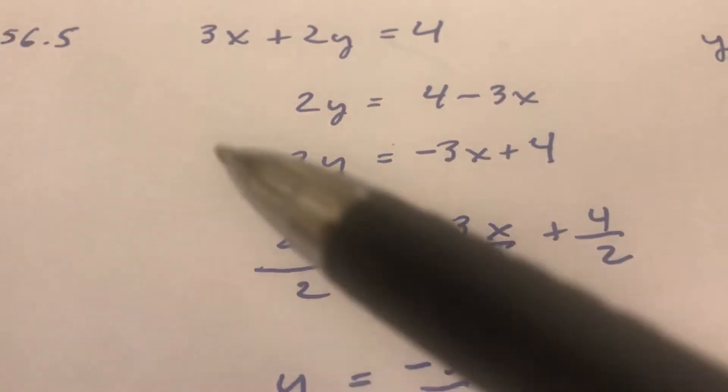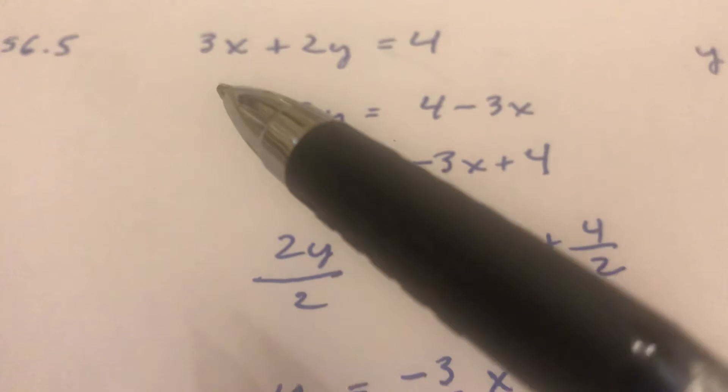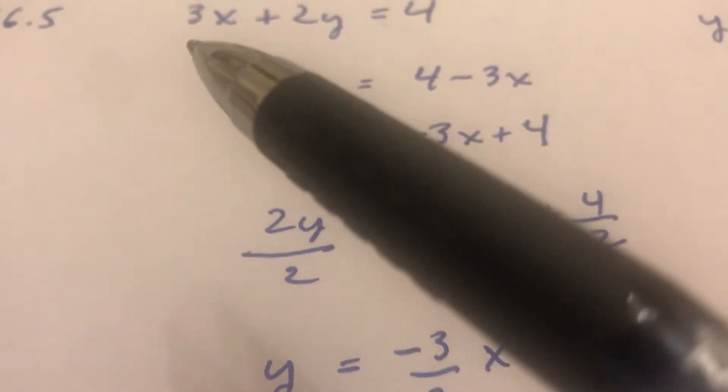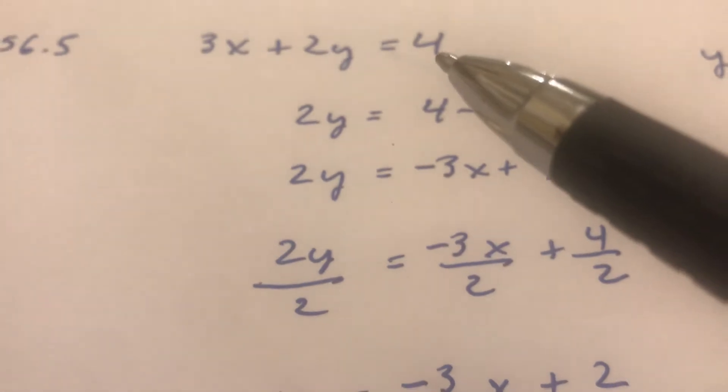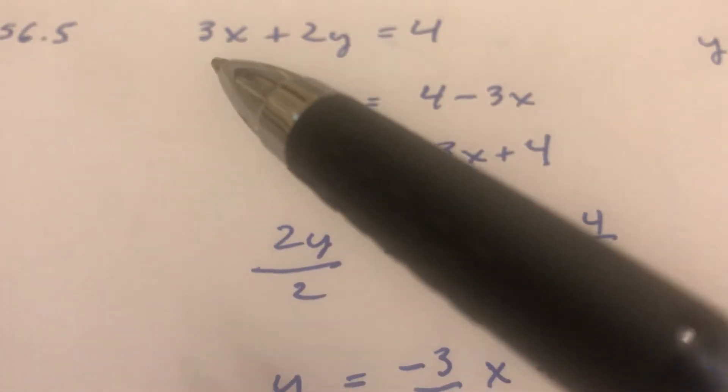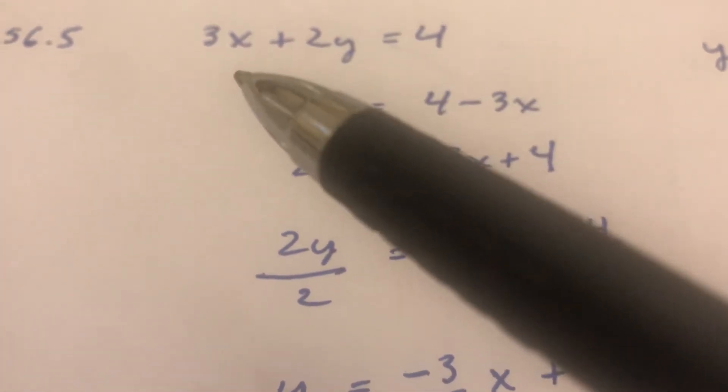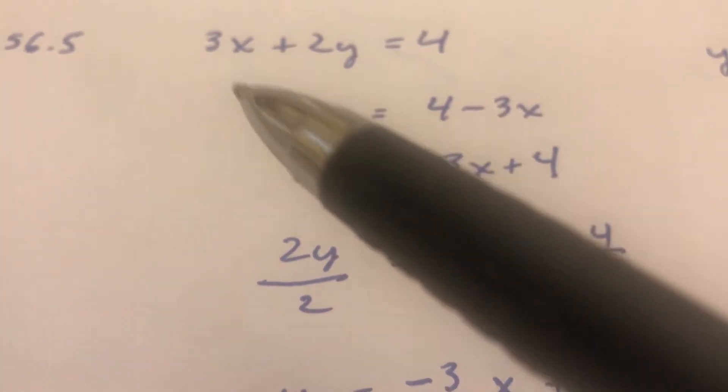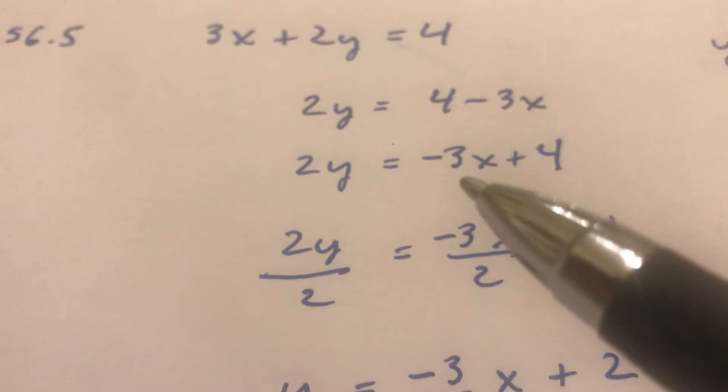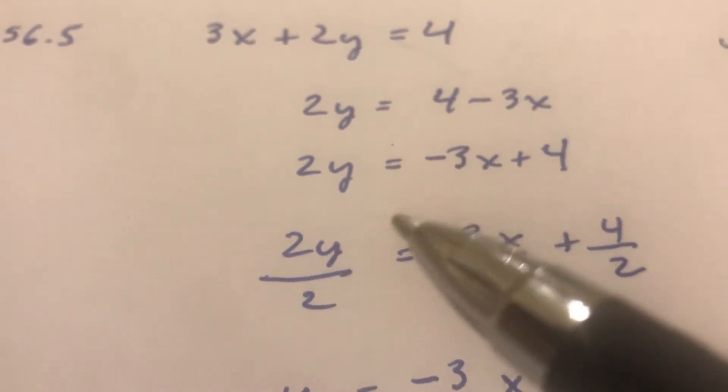Now the other thing I like to do instead of subtracting 3x from both sides - an equivalent thing is when I take something like 3x I can just bring it to the other side by changing the sign. So 3x positive on this side I bring it to this side it's minus 3x. Pretty easy just to do it that way.